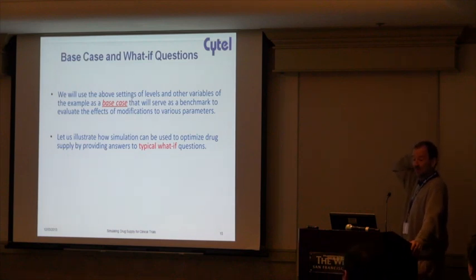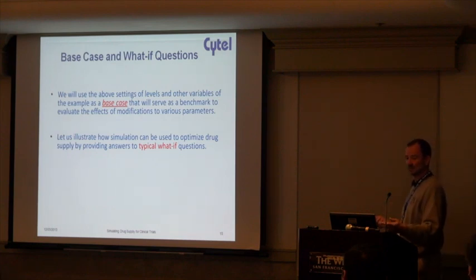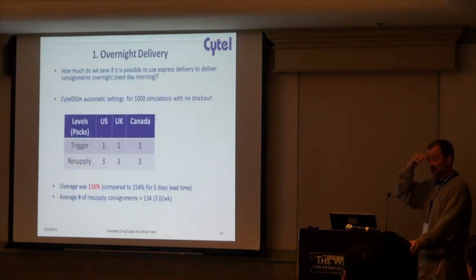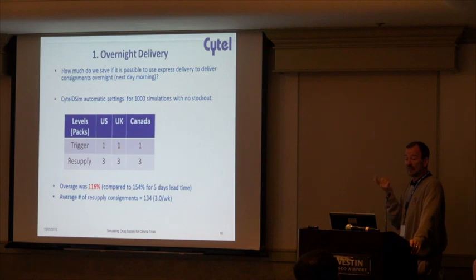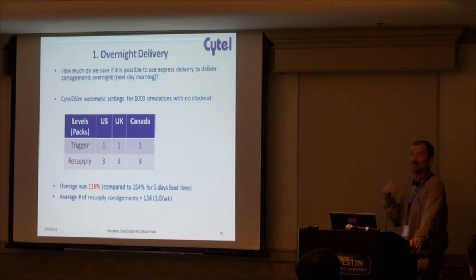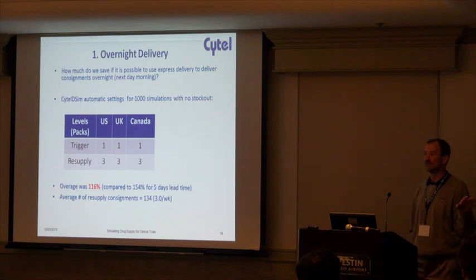Now we have the base case and we want to play some what-if games. That's the value of this software, because 154 percent more drug that's just going to be destroyed is costly. What if we use overnight delivery? It's a lot more costly, but it shrinks the five-day delivery down to one day. If we do that, the trigger levels decrease substantially and the overage reduces from 154 percent to 116 percent, while the number of consignments stays about the same at 134.